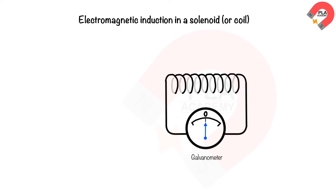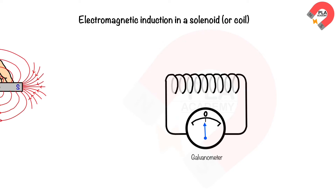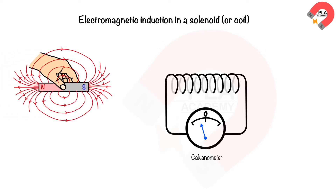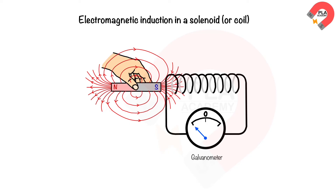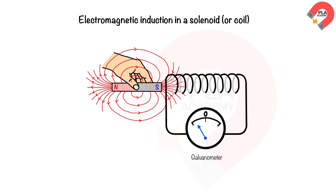When a stronger magnet moves into the solenoid at the same speed as before and stops, the deflection of the needle is greater to the left. This means that the induced current increases as the magnetic field strength increases — the stronger the magnet, the stronger the magnetic field strength.